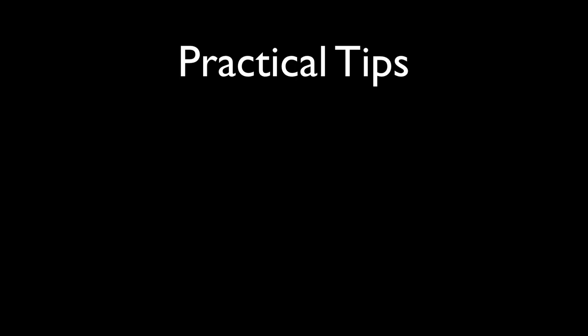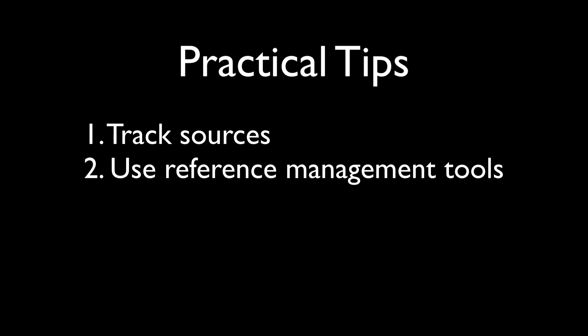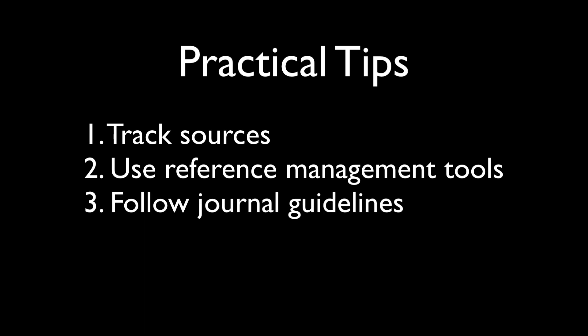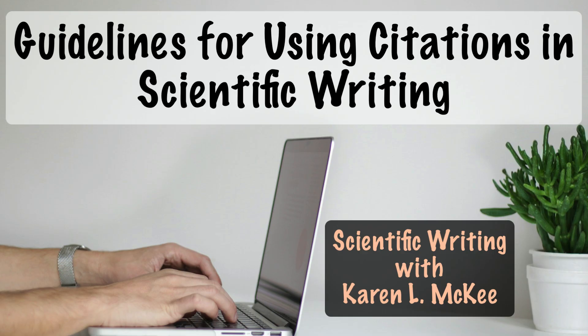Finally, here are a few practical tips. Track your sources — keep a detailed list of sources you consult while writing to ensure no references are accidentally omitted. Use reference management tools: software such as EndNote, Mendeley, or Zotero can help organize references and format them correctly. Check journal guidelines, as citation and referencing requirements vary across journals — follow the target journal's instructions precisely. By following these guidelines, you will maintain the integrity of your scientific work, avoid ethical issues, and present your research in a credible, well-supported manner.